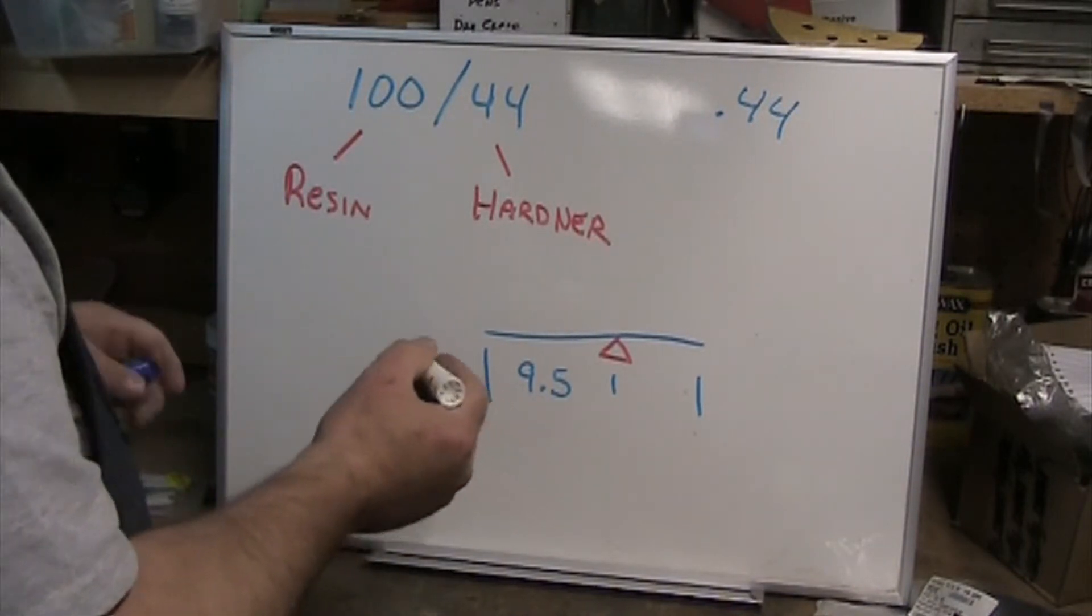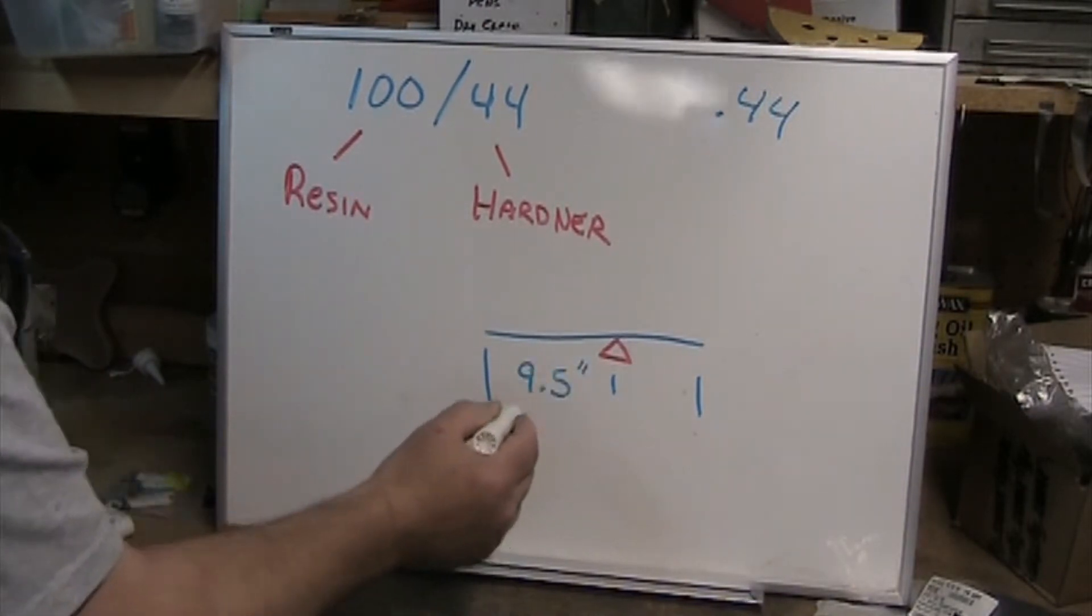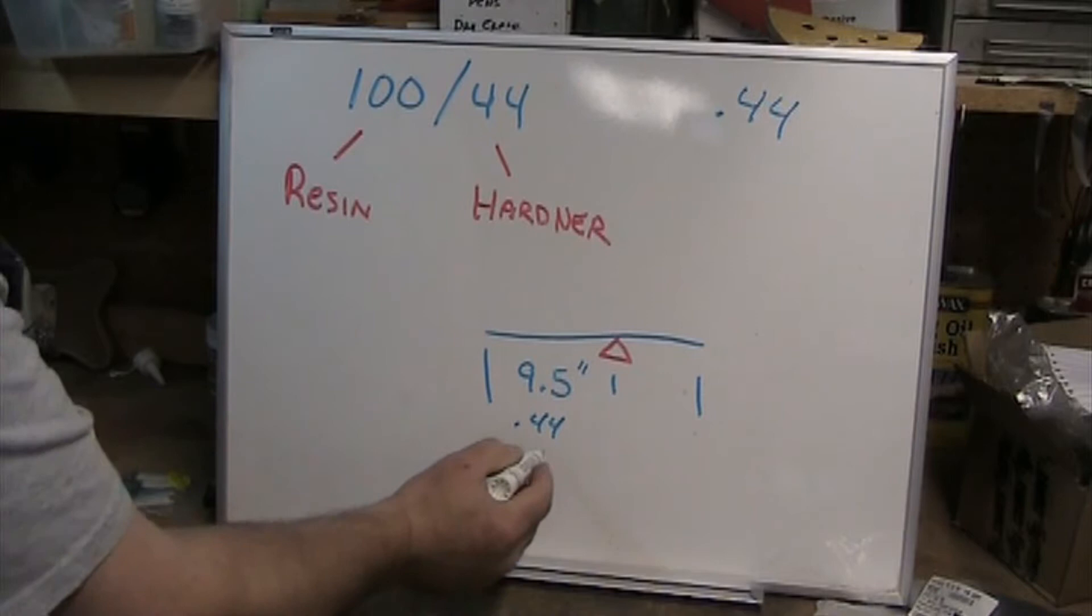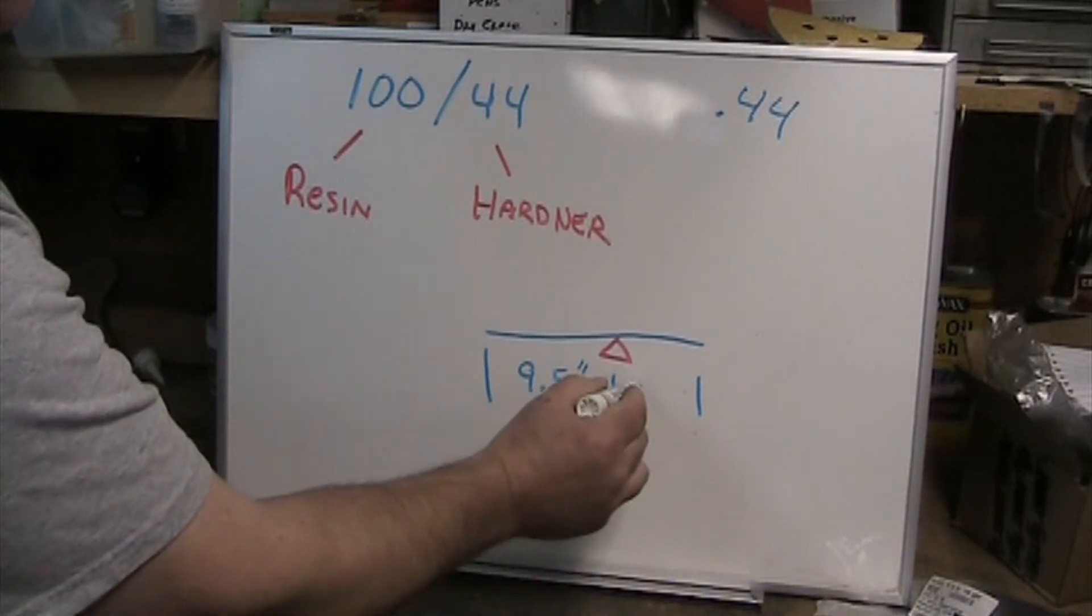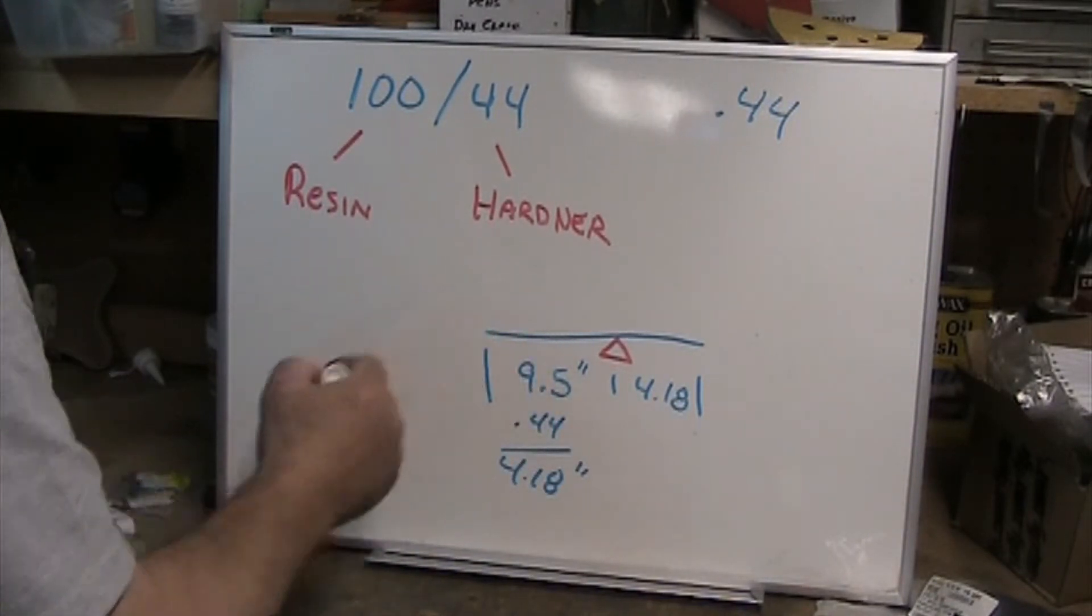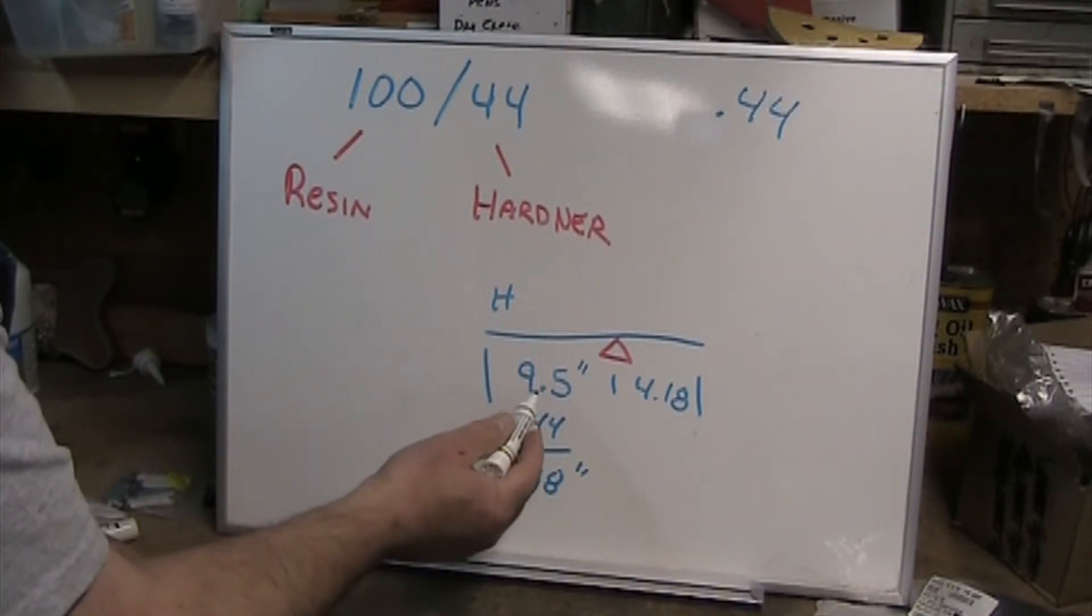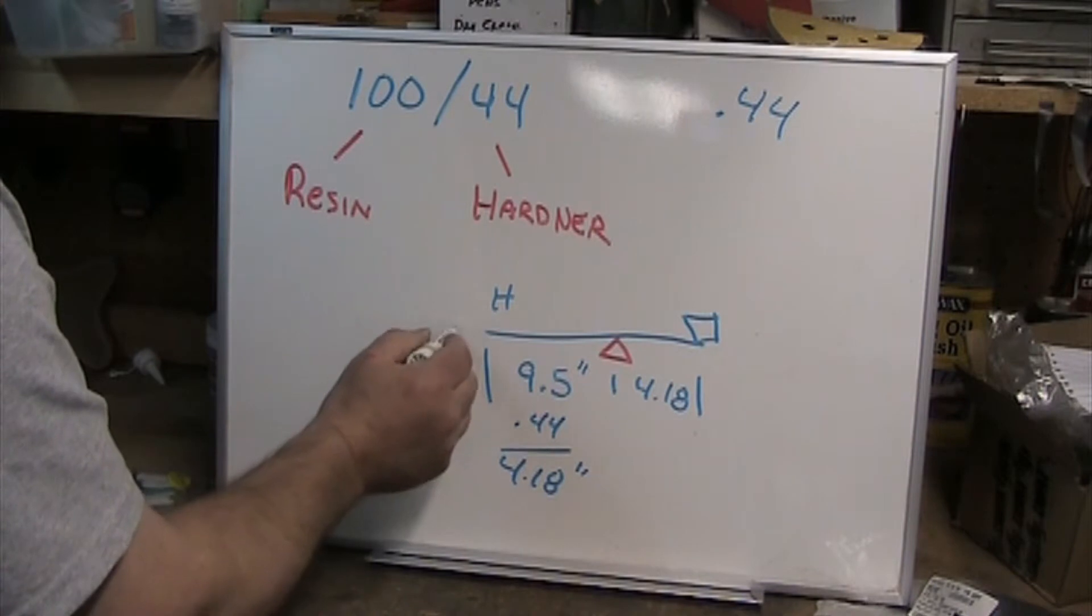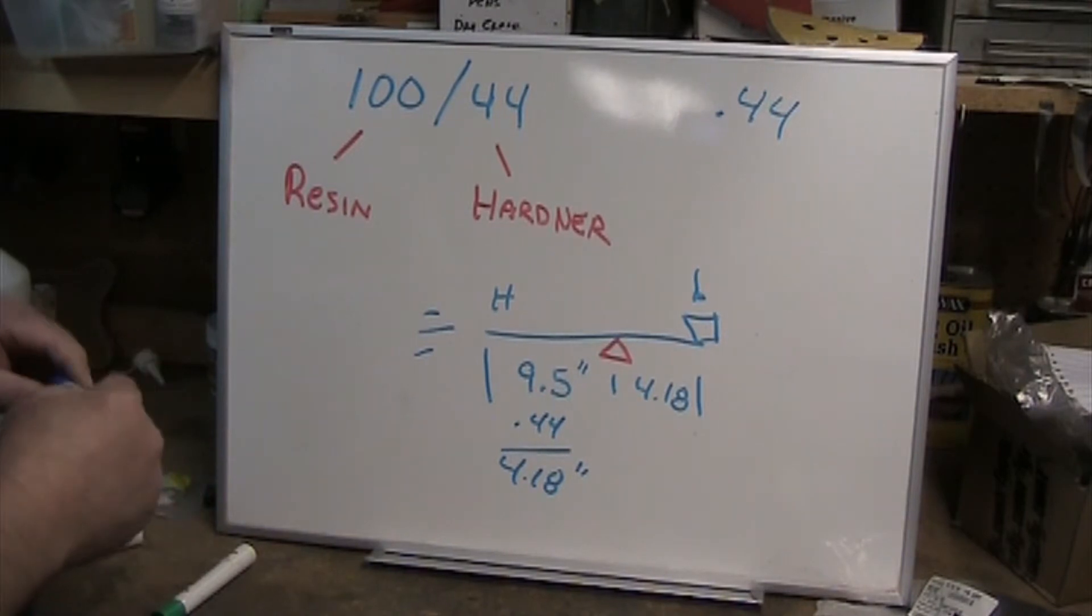Why is that important? Because we're going to take our arm for the hardener at 9.5 inches and multiply that by 0.44. That's going to give us 4.18 inches. That is the distance for the arm for the resin. So the hardener will go on this side at 9.5 inches, whatever the weight turns out to be. We put our cup at 4.18 inches.